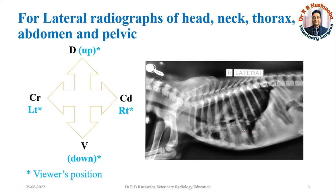Now, coming to the orientation of different body parts in different views. For the lateral radiograph of the head, neck, thorax, abdomen, and pelvis: if you have the lateral radiograph of these parts, you display the radiograph such that the cranial part or head of the radiograph is towards the left side of the viewer or radiologist, the caudal part is towards the right side, the vertebral column should be on the top of the X-ray illuminator, and the ventral part of the body at the bottom.